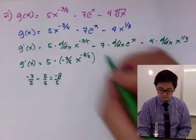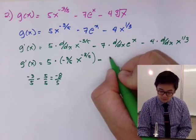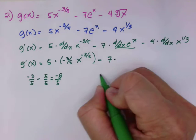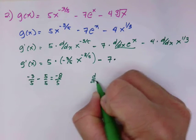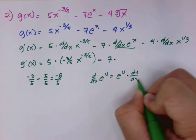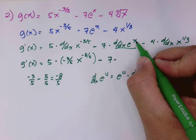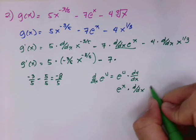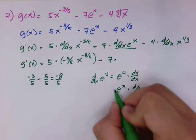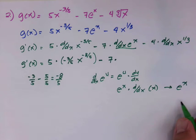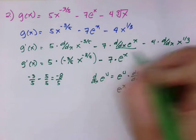Now let's take the derivative of the second term. We copy the coefficient 7 and multiply by the derivative of e to the x. The rule for d/dx of e to the u is e to the u times du/dx. Since the exponent is just x, its derivative is 1, so the derivative of e to the x is simply e to the x.